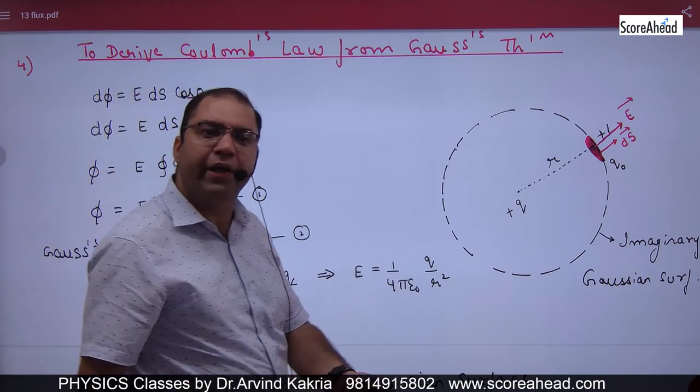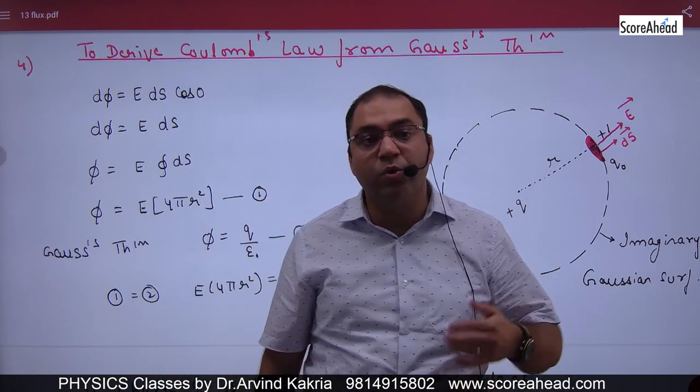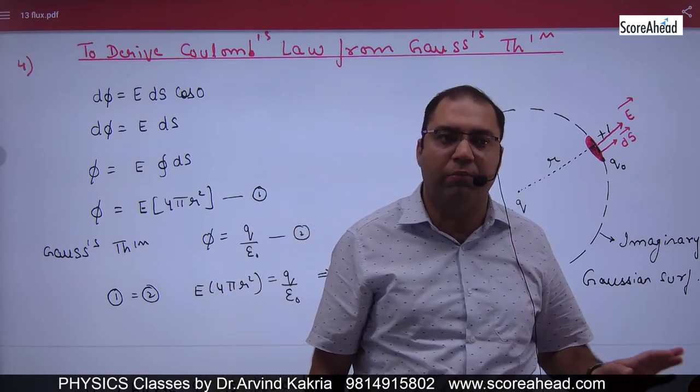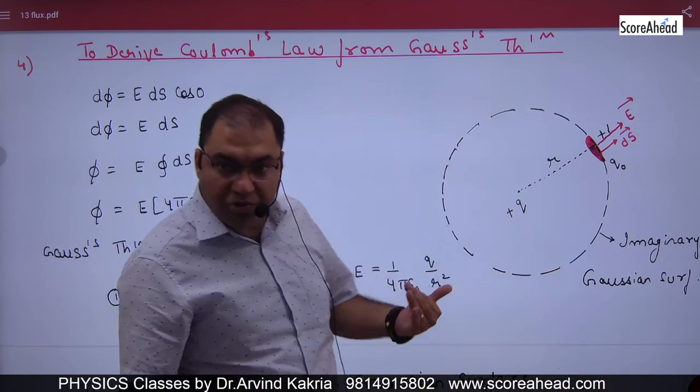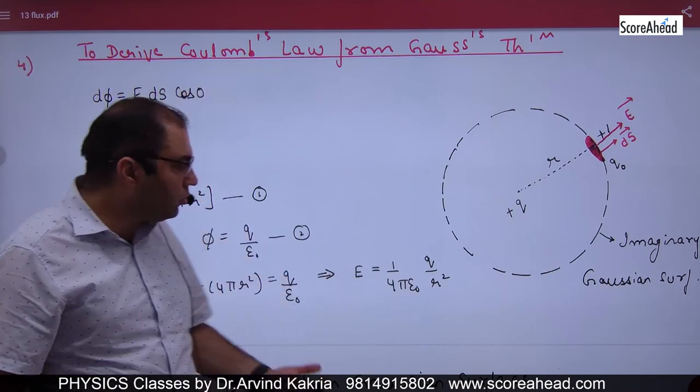I know what the result is going to be: 1 by 4π epsilon naught q by r square. But I couldn't use it because where did the result come from? By using Coulomb's law. So now I will use it because where did I produce this result? By using Gauss theorem. So this value came.